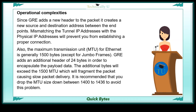Also, the maximum transmission unit, MTU, for Ethernet is generally 1500 bytes, except for jumbo frames. GRE adds an additional header of 24 bytes in order to encapsulate the payload data. The additional bytes will exceed the 1500 MTU which will fragment the packet causing slow packet delivery. It is recommended that you drop the MTU size down between 1400 to 1436 bytes to avoid this problem.